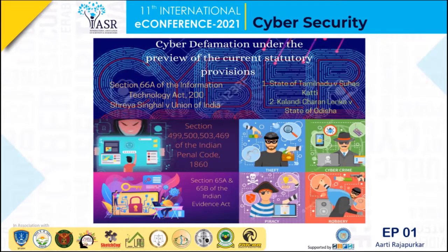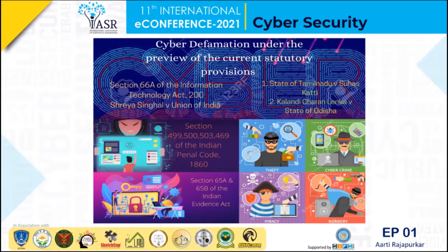Another concern is the technical feasibility of censorship and the filtration of defamatory content. There are difficulties in this process in identifying or isolating what is defamatory or offensive — which website is to be blocked, how and when, its implications, and other similar types of content. There has to be a technical feasibility mechanism to address this.